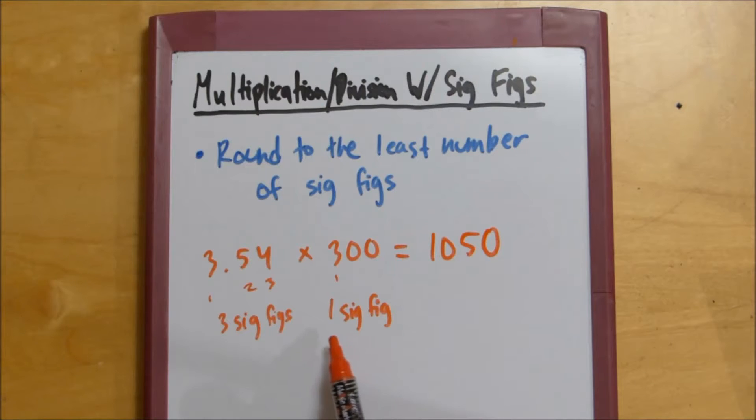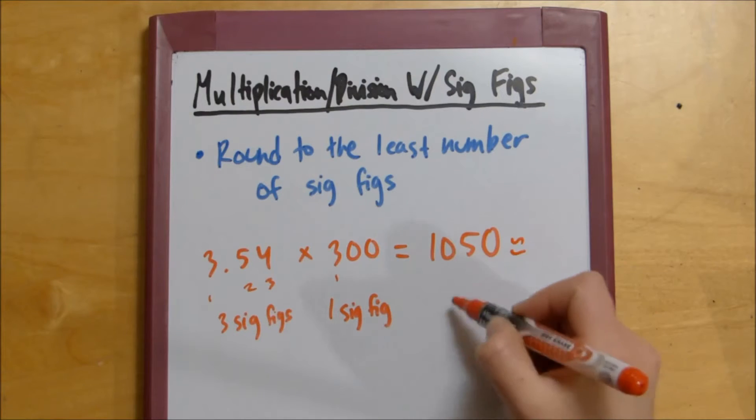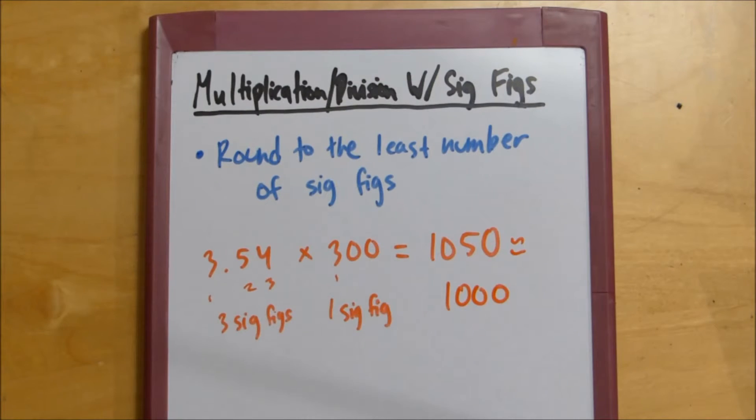So the answer ends up being 1,050. And because we know this has to be to 1 sig fig and we have 3 sig figs here, 1, 2, 3, we're going to want to round it to 1,000. And that is basically multiplying with sig figs.